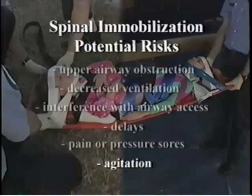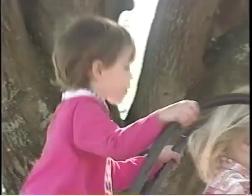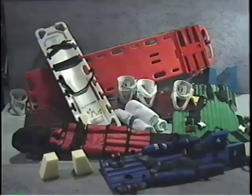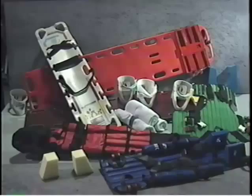Although spine injuries are uncommon in children, the potential for severe and permanent injury requires a careful approach. By understanding the unique anatomic features of children, recognizing the limitations and benefits of various types of spinal immobilization equipment, and practicing and planning correct spinal immobilization maneuvers, you can safely and effectively provide an essential component of excellent pediatric trauma care.